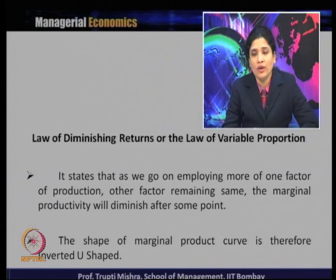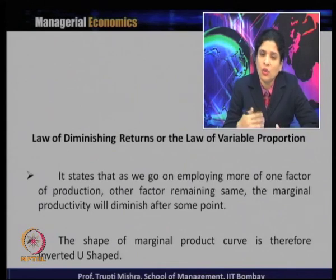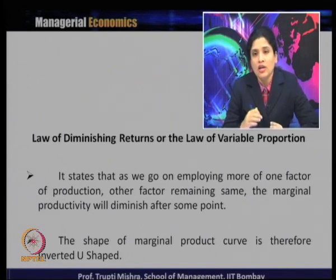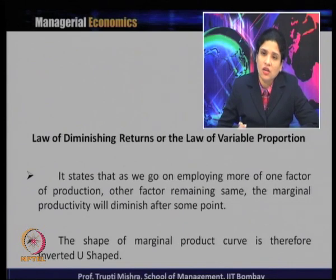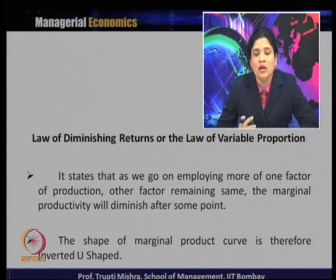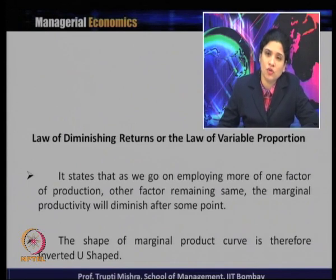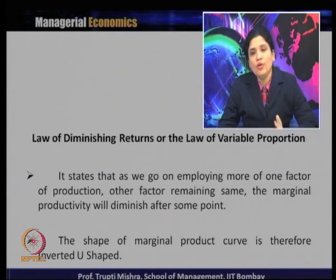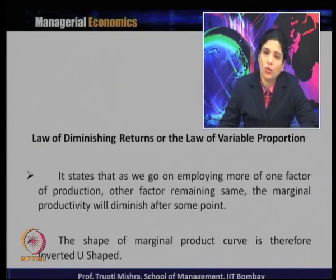To illustrate, consider a photocopier machine as the capital (K). The working hours can be 8 to 10 hours. To run it for 8 to 10 hours, perhaps 2 persons are sufficient. For 1 person it may be enough, and for 2 persons it is good enough. But if the shop owner employs more than 2 workers, it is not going to increase total product — rather, it will decrease.